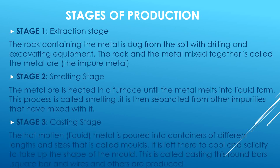The rocks and the metal mixed together are called metal ore — that is the impure metal. Stage two is the smelting stage: here the metal ore is heated in a furnace until the metal melts into liquid form. It is then separated from the other impurities mixed with it. Stage three is the casting stage, where the molten liquid metal is poured into containers of different lengths and sizes called moulds. It is left to cool and solidify to take up the shape of the mould.